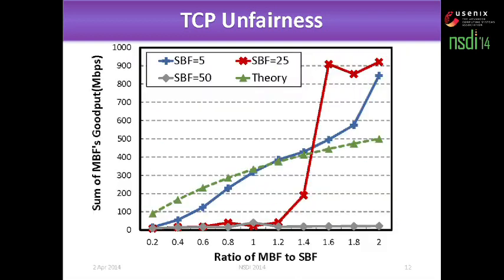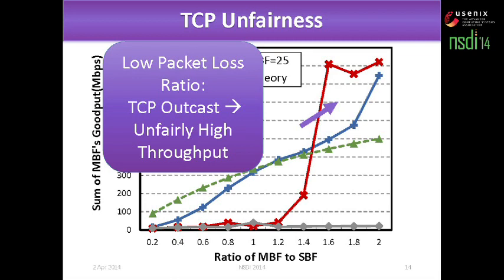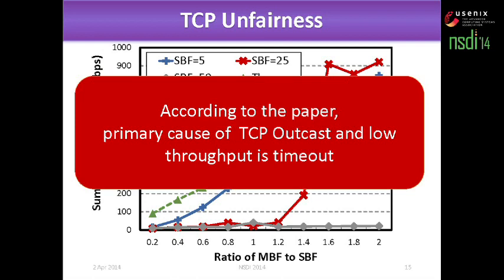We expand step by step. In high packet loss ratios, multi-bottleneck flows suffer significantly low throughput — the same as in the internet. But in low packet loss ratios, this phenomenon does not happen. We only find TCP outcast was presented around 2010 — it's an unfairly high throughput scenario. According to these two papers, we can confirm that the primary cause of TCP outcast and low throughput is TCP timeout. So we think if we avoid TCP timeout, we will tackle the problem of TCP unfairness.